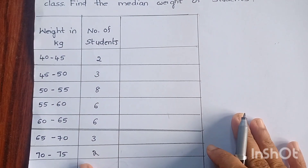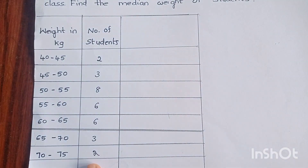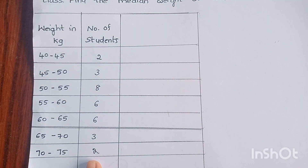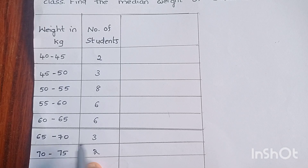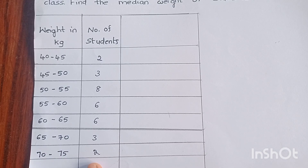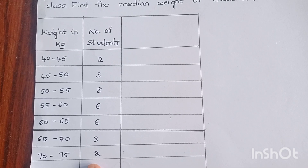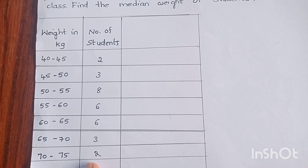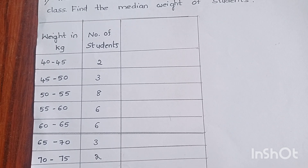From the question, these two informations are available. By using these two pieces of information, we have to find out the median. To find out the median, we have to identify the median class. To identify the median class, we have to prepare the cumulative frequency table. So first let us prepare the cumulative frequency table.